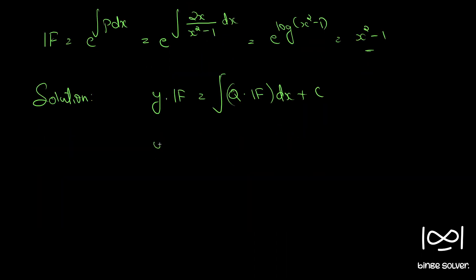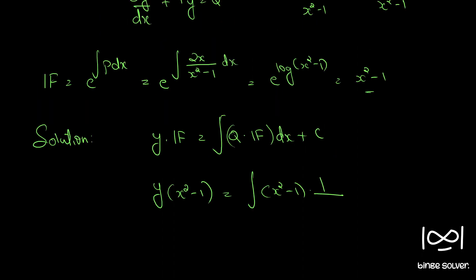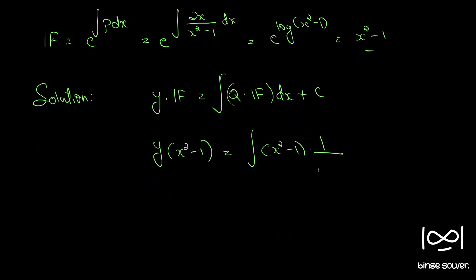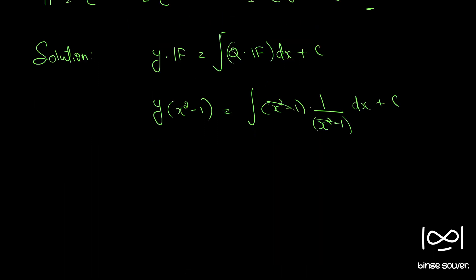So we have y(x² - 1) = ∫(x² - 1) · 1/(x² - 1) dx + c. These two cancel and we have y(x² - 1) = ∫dx = x + c.